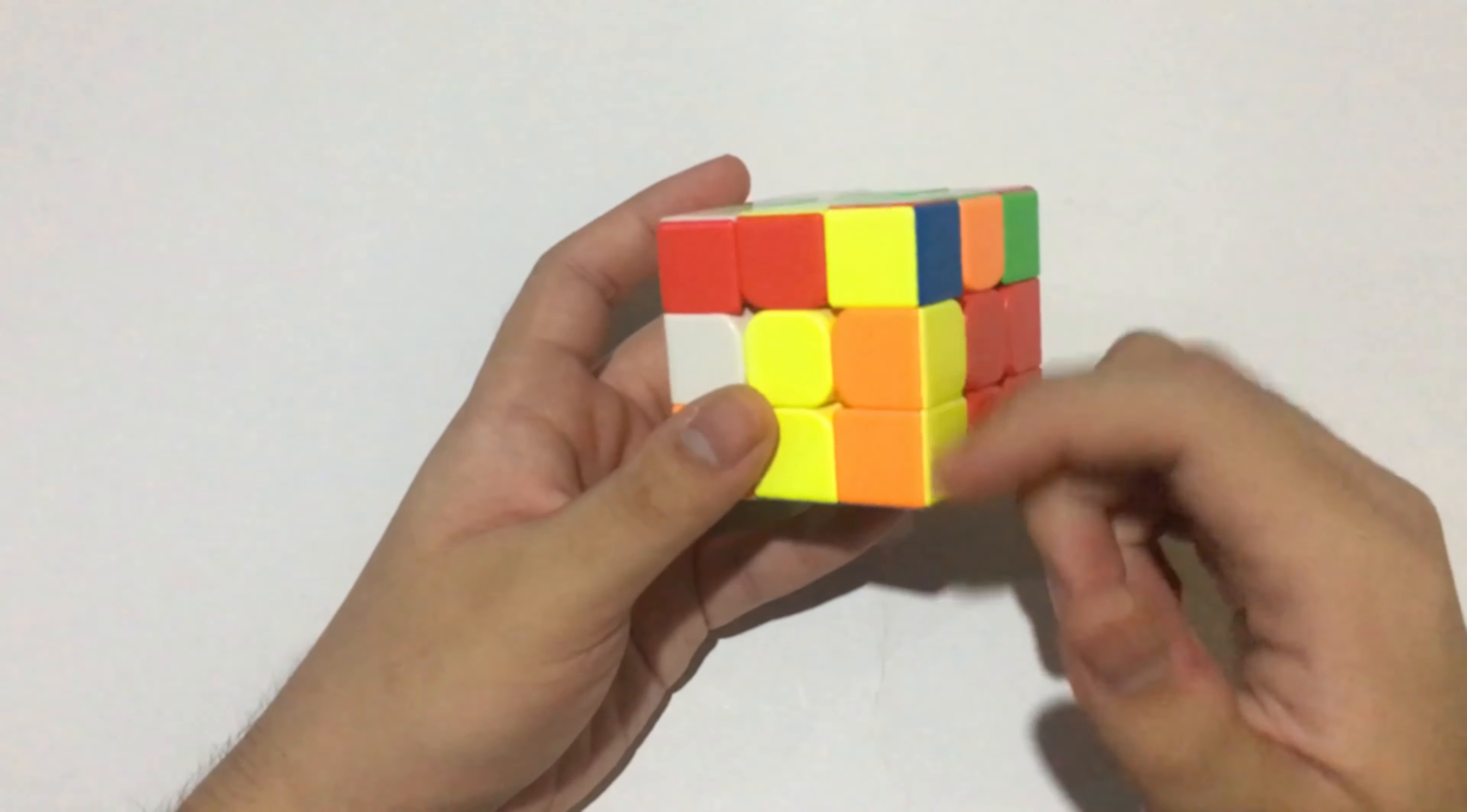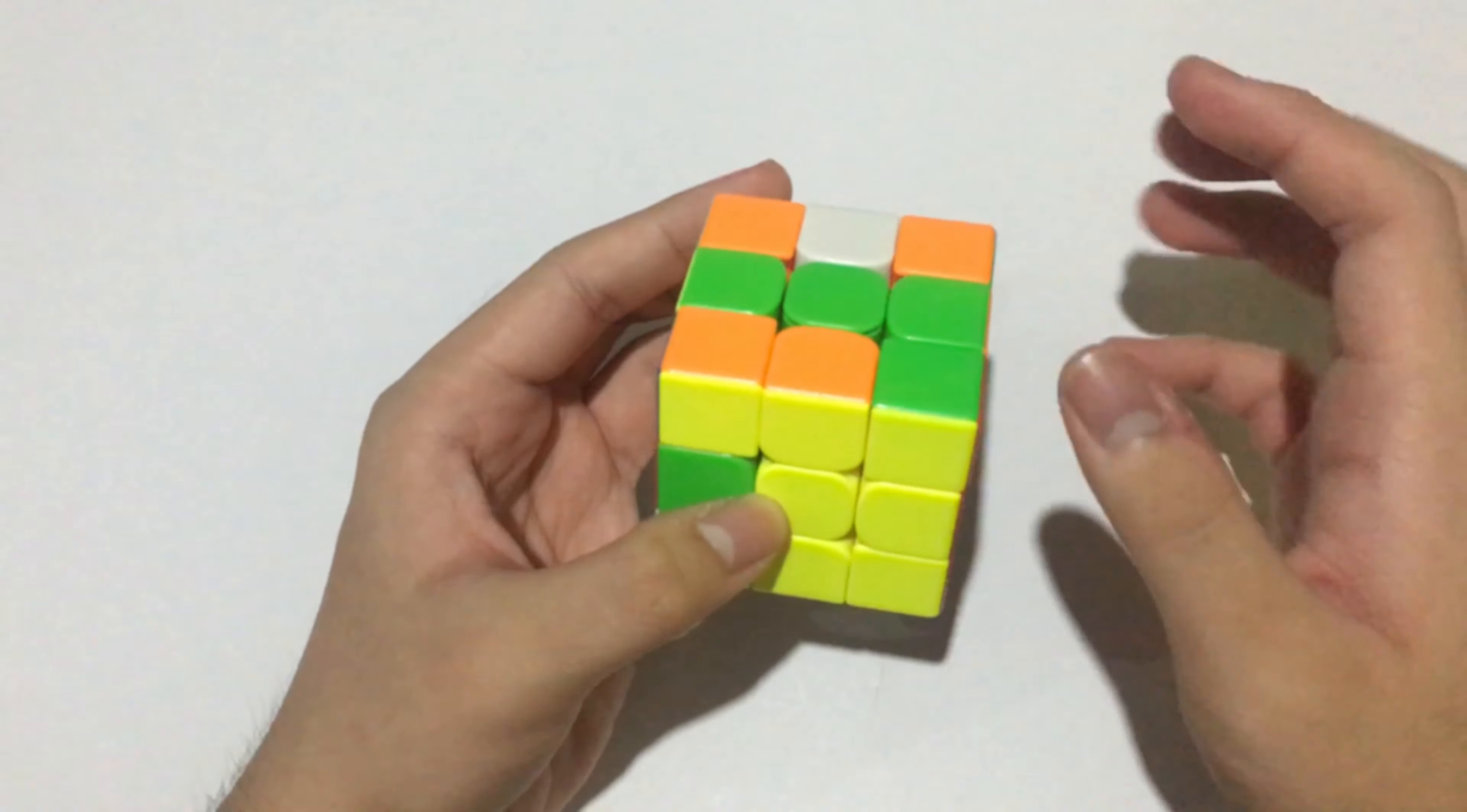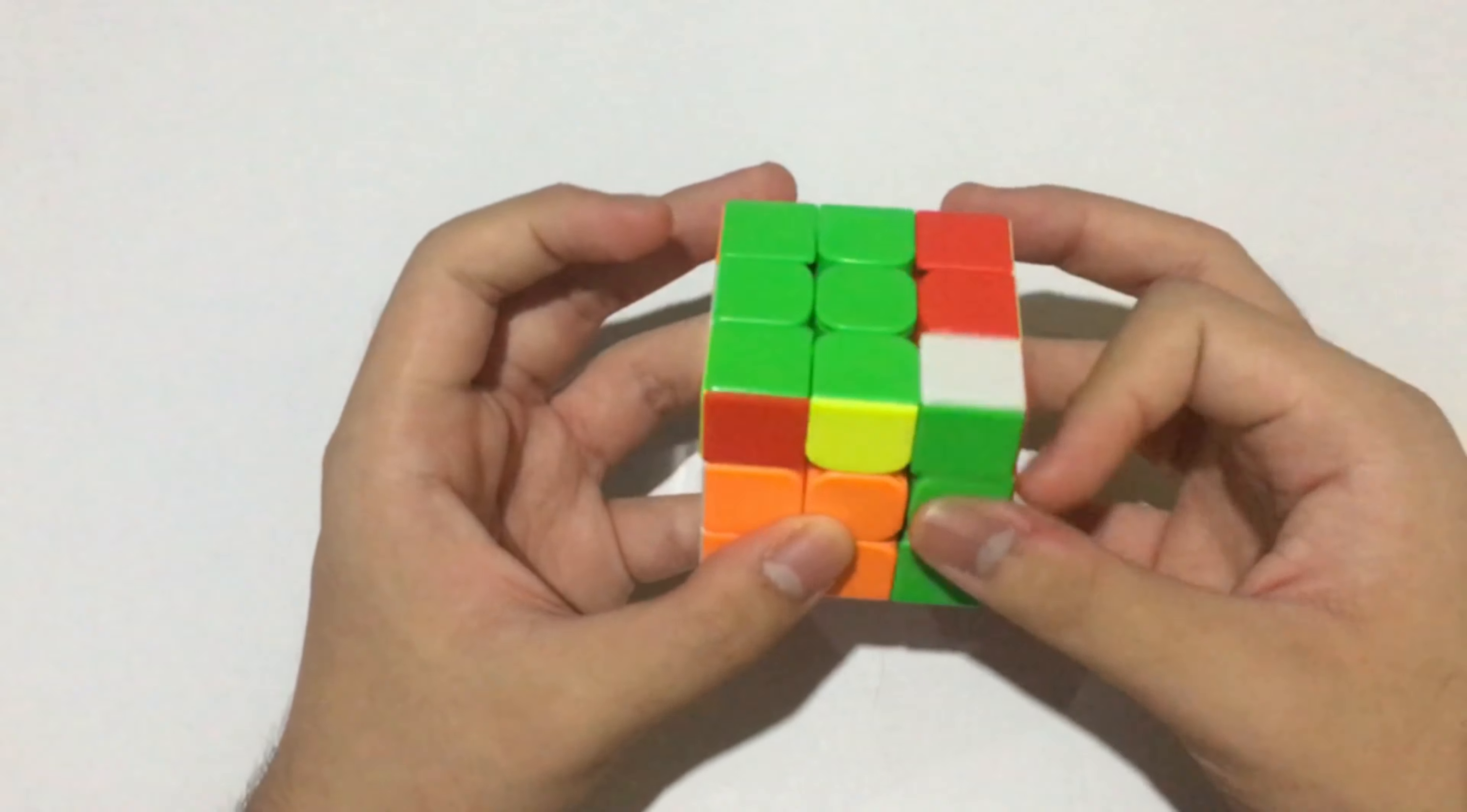I inserted it on the back. Then I noticed that I have a pair here that's made, but it's on the adjacent slot to where it should go. I did U2 and inserted. Now I rotated to solve this pair on the front side, then this algorithm and R-B perm.